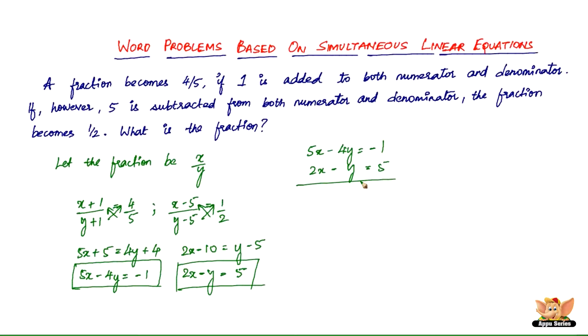So you can employ any of the method that you want. Substitution or elimination, cross multiplication. What I'm going to do here is elimination. So I'm going to eliminate y. So the coefficient of y here is negative 1, or just 1, let me multiply this by 4. The coefficient of y here is 4.